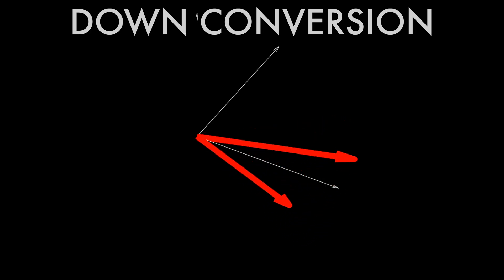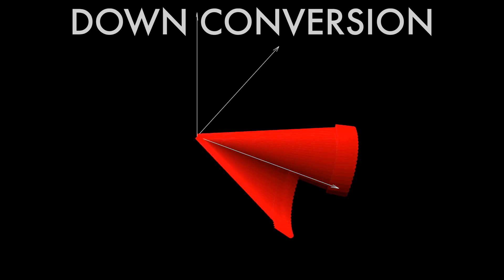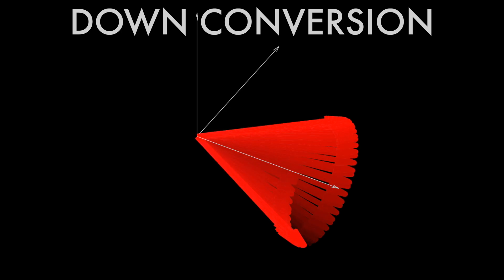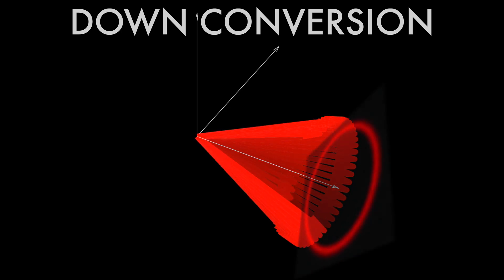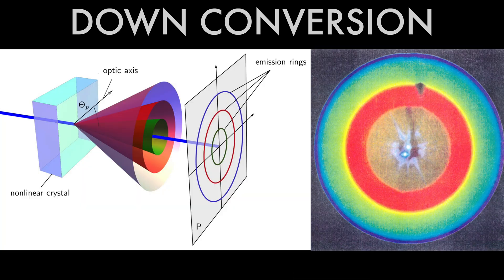Also, momentum conservation means that the direction of the new beams must have the same angle to the initial direction. And as this can happen in any spatial direction, the downconverted light will be emitted in a cone shape. If several different photons can be created, you get different cones for different frequencies.